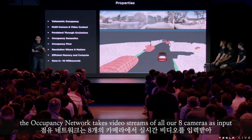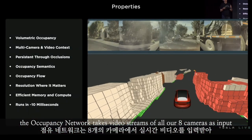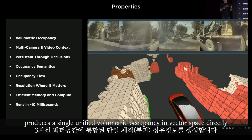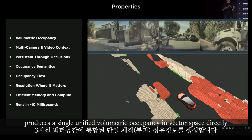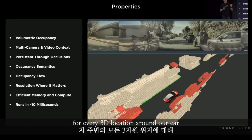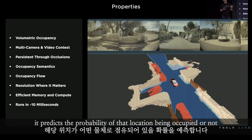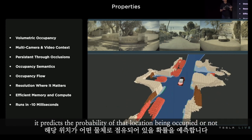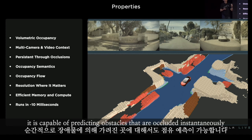The occupancy network takes video streams from all eight cameras as input and produces a single unified volumetric occupancy in vector space directly. For every 3D location around our car, it predicts the probability of that location being occupied or not. Since it has video context, it is capable of predicting obstacles that are occluded instantaneously.